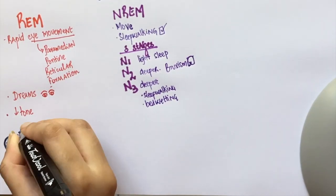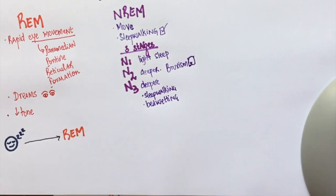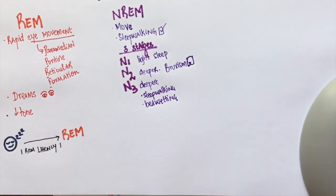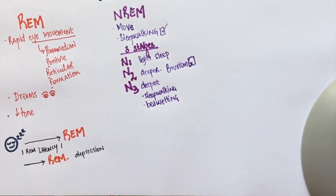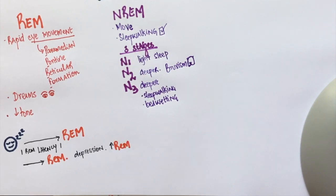REM latency refers to the amount of time taken to get to the first REM stage after falling asleep. People with depression get into REM sleep very quickly. This means the time taken to get there is very little. However, the amount of REM sleep increases in people with depression.